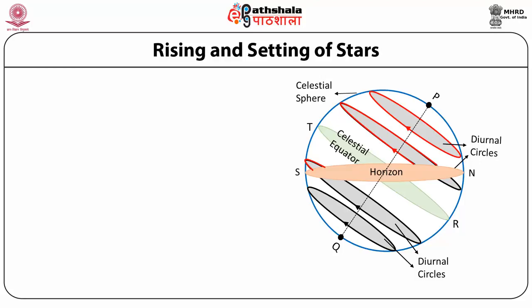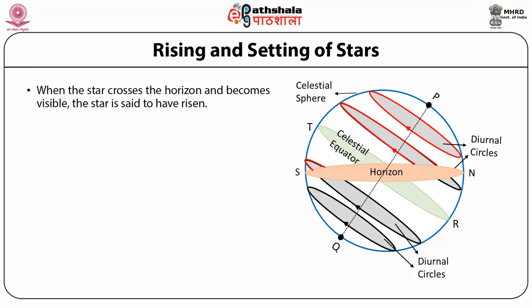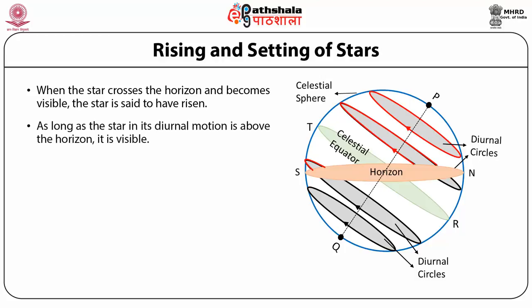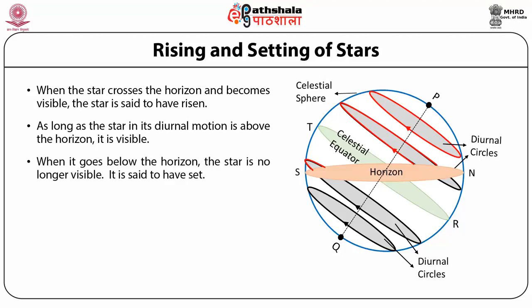The portion of the diurnal circle above the horizon is where the star is visible. Below the horizon, the star is not visible. When the star crosses the horizon and becomes visible, the star is said to have risen. As long as the star in its diurnal motion is above the horizon, it is visible. When it goes below the horizon, the star is no longer visible — it is said to have set.